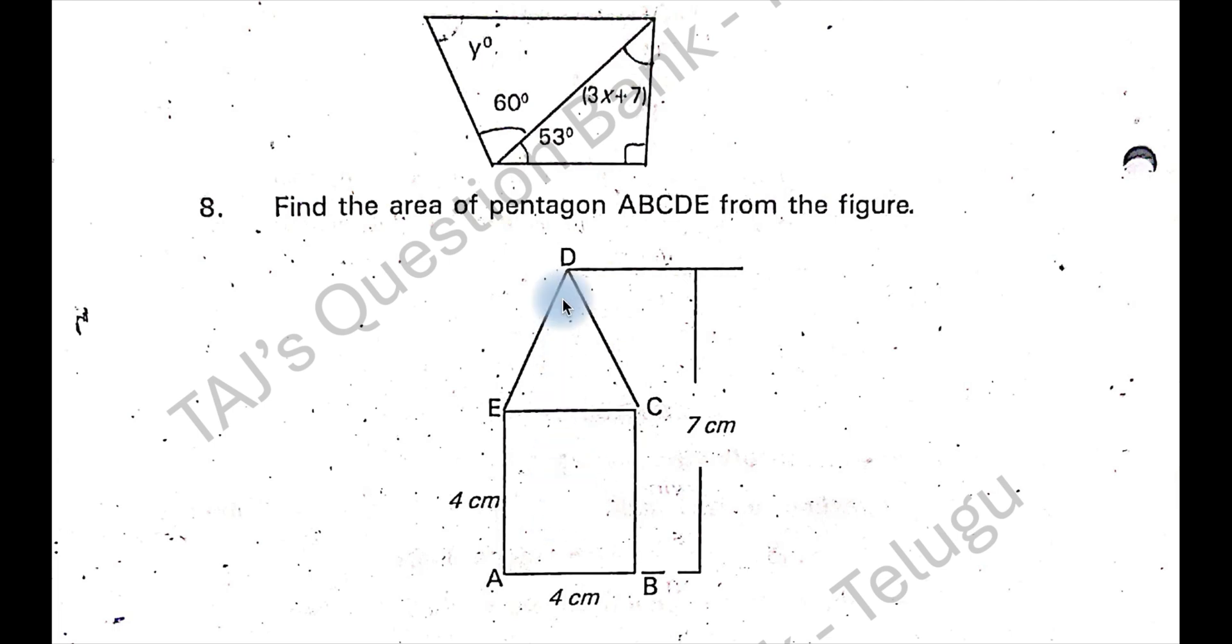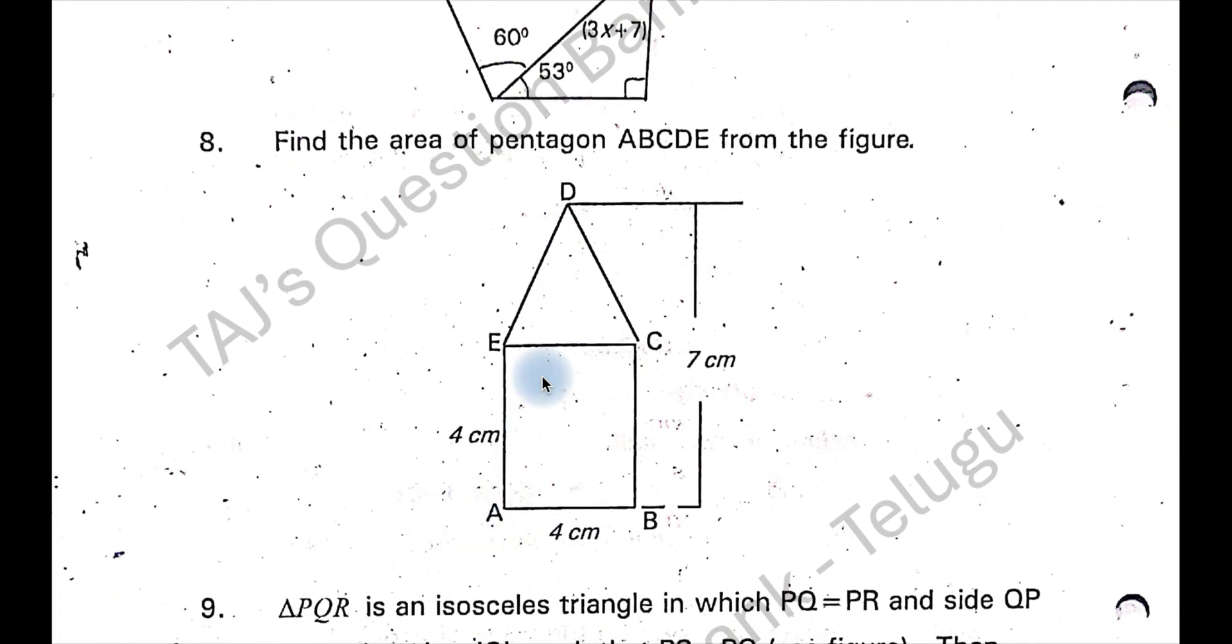So you have to find the area of this. This is a square, this is a triangle. Area of the square is 4 into 4, 16 centimeter square. Triangle is half into base into height, that is 6 centimeter square. Total it is 22 centimeter square.